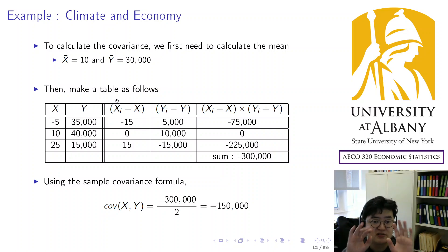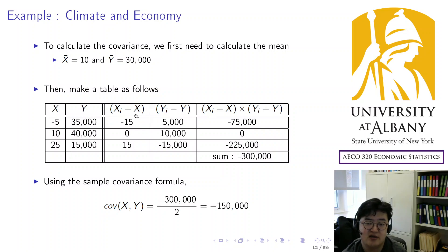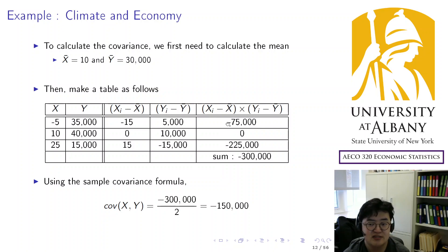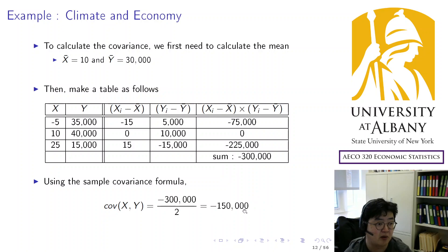You are treating two variables separately up to this point. Now you multiply these two deviations — this is where the two variables start to interact. Multiply minus 15 by 5,000: you get minus 75,000. Zero times something is 0. 15 times minus 15,000 is minus 225,000. When you calculate the cross product of deviations, all observations are minus or zero, so easily the relationship is negative. Add these three numbers and divide by 2 (sample size 3, subtract 1), and you get minus 150,000 for the covariance. We can say the direction — the relationship — is negative.